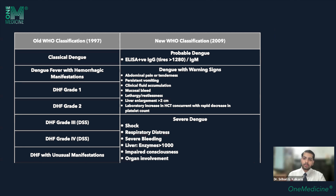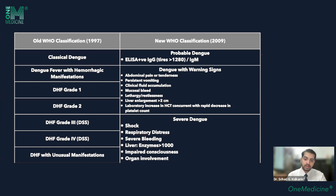In the new classification: probable dengue is where ELISA is positive with an IgG titer of more than 1:80 indicating secondary infection, or a rapid increase in IgM. Confirmed dengue is RT-PCR proven presence of the virus. Dengue with warning signs uses the previously mentioned warning signs criteria. Severe dengue is marked by shock, respiratory distress, ARDS, severe bleeding manifestations — distinct from minor mucosal bleeding — liver enzymes elevated above 1,000, impaired consciousness, and organ involvement.